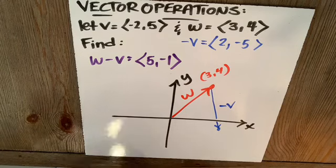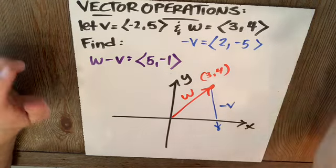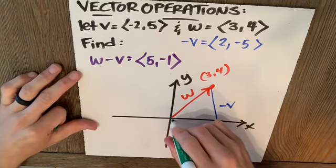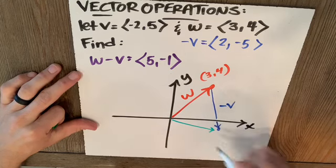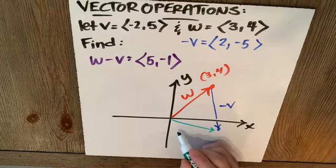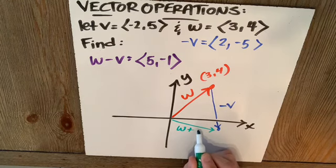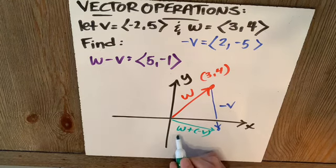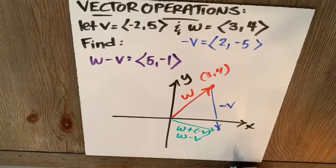And so my resultant vector, we'll call it this green vector here, is from the tail of the first to the head of the last, or initial point of your first vector to terminal point of your second vector. Our resultant vector is W plus the opposite of V, or we can just say that's W minus V.